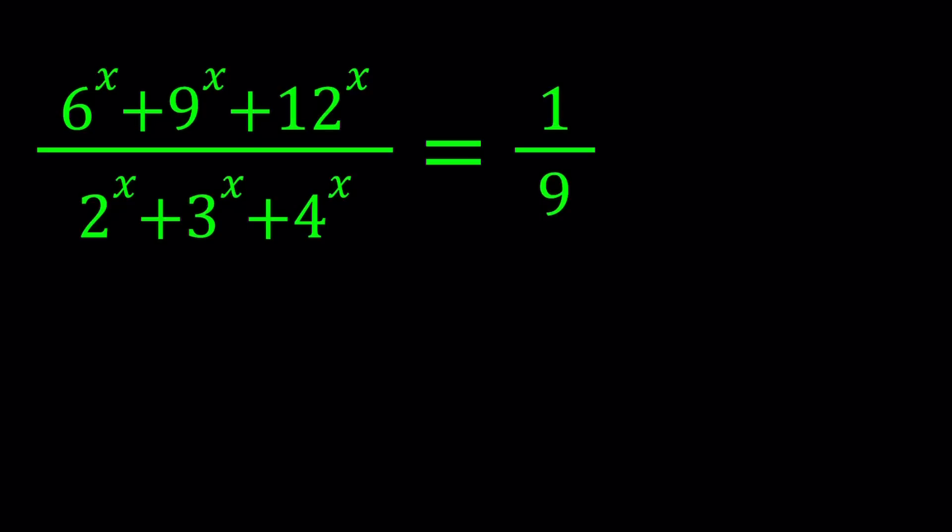I'll be presenting two methods. And the first method basically depends on substitution. So let's start. So for our first method we're going to do the following. Noticing that we have 2 to the x and 3 to the x, and if you look at all these bases like 12 and 6 and 9 we can basically write them using 2 and 3 as prime factors. So let's go ahead and do the following.